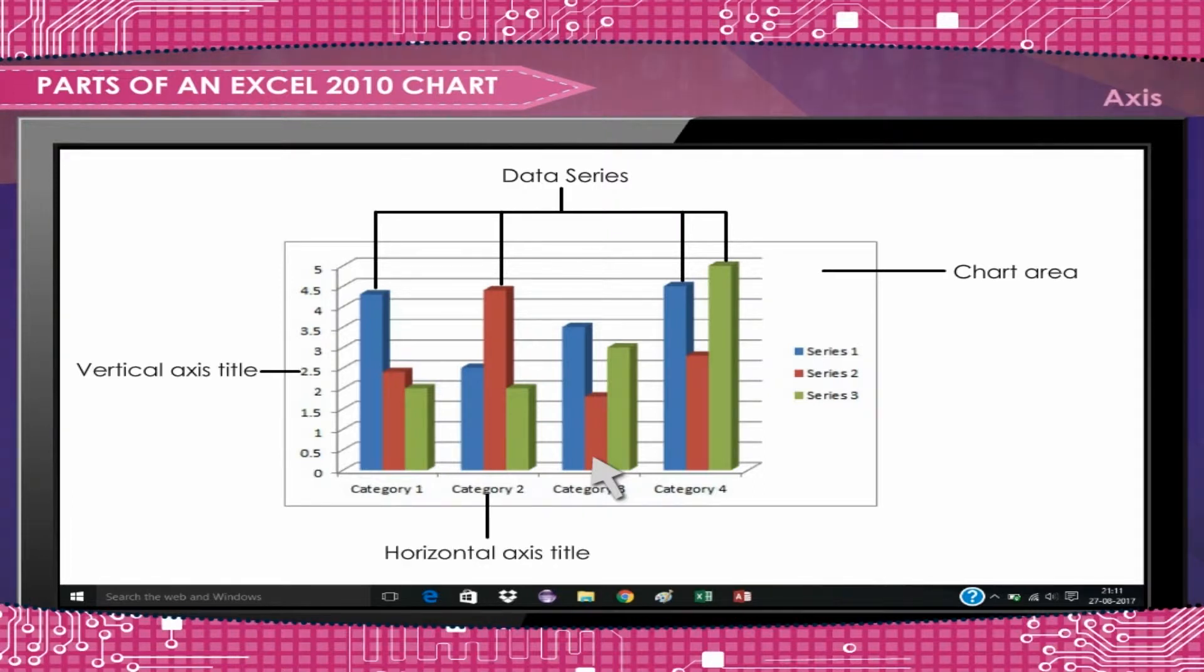Axis: A line that serves as a major reference for plotting data in a chart. In two-dimensional charts there are two axes: the x-axis, horizontal or category, and the y-axis, vertical or value.